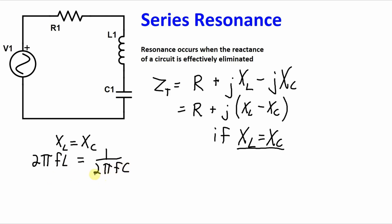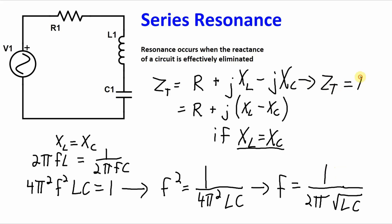So move this 2πC over to the left hand side of the equation. And then isolate the F squared term on the left hand side. And then take the square root of both sides of the equation. So when frequency is equal to 1 over 2π times the square root of L times C, the reactive terms cancel out, and you end up with a total impedance that is simply equal to R.